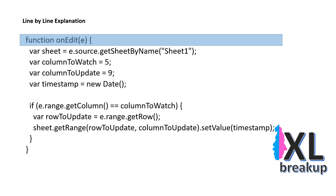This line is the beginning of the function onEdit, which is triggered every time an edit is made to the sheet. The parameter E holds information about the event that occurred, such as the range that was edited.